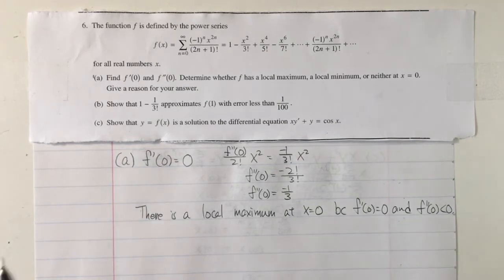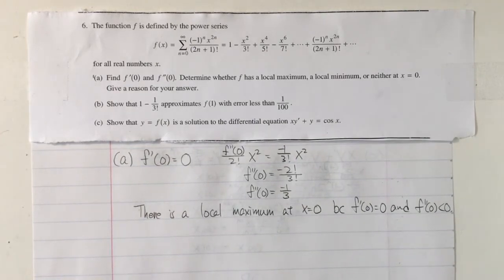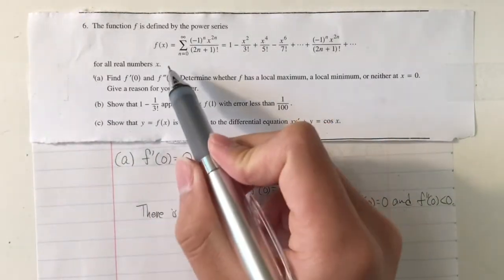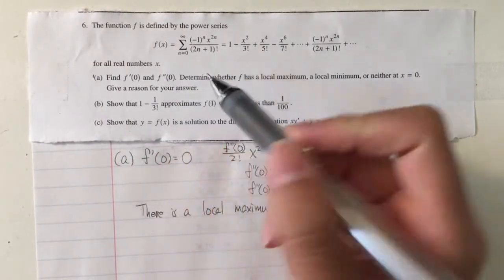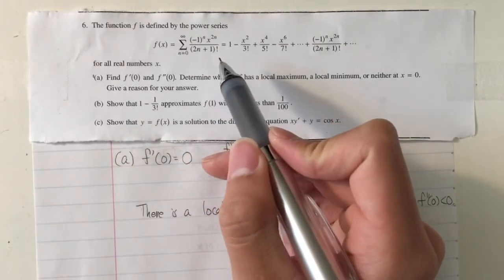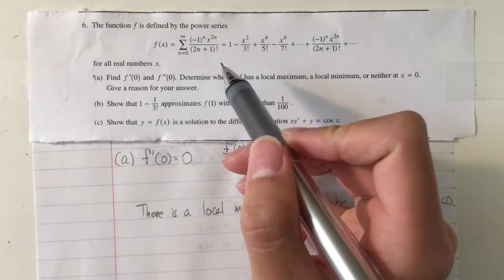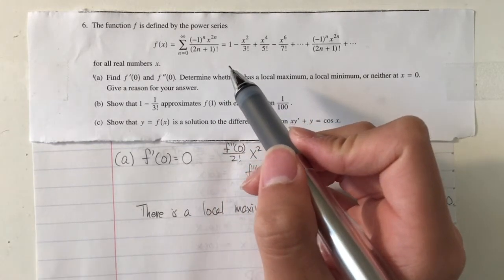Okay, hi, so we're going to talk about number 6 on 2013 BCFRQ. The question gives you a series, and if you're first seeing it, you should recognize that it's very similar to either a cosine series or a sine series.